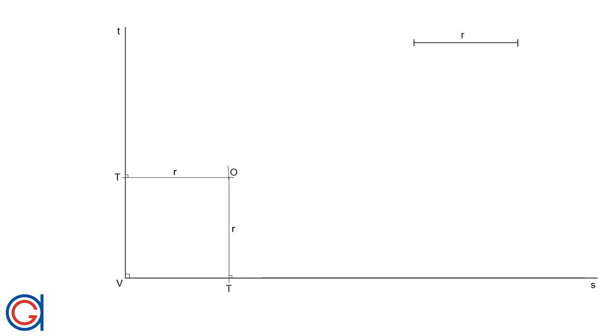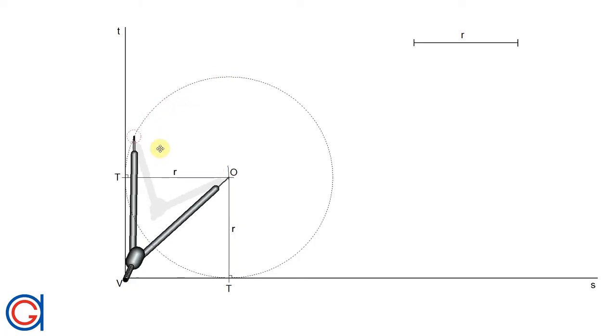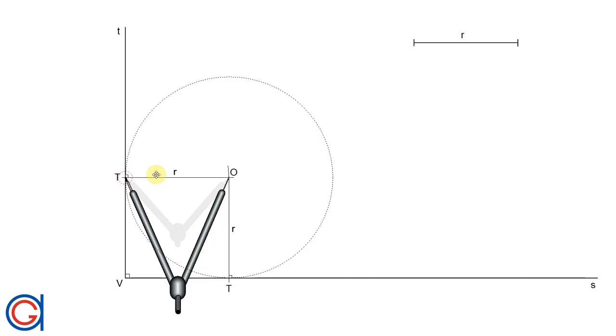And finally, setting our compass to the length of the given radius and setting our compass on center point O with a thicker line, we are going to join tangent point 1 to tangent point 2, as can be seen here.